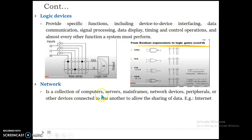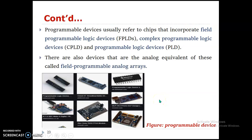The fourth type is the network — a collection of computers, servers, mainframes, network devices, peripheral devices, or other devices connected to one another to allow sharing of data. A network is used to create interconnections between different devices. By using a network we can share data between devices, while a logical device is used to interface different devices together.